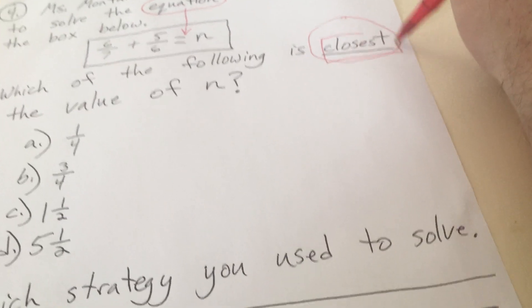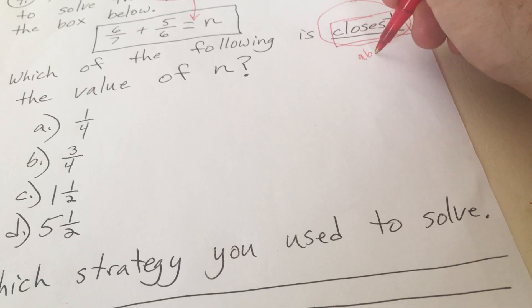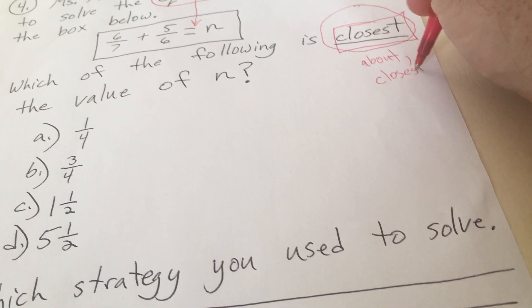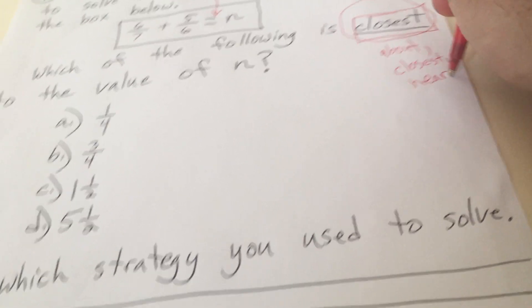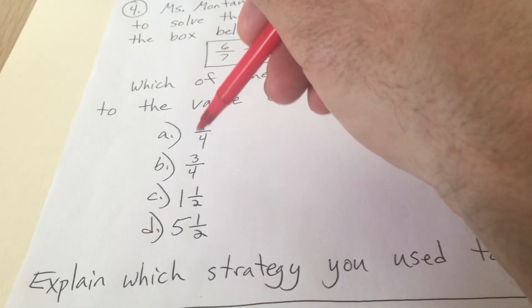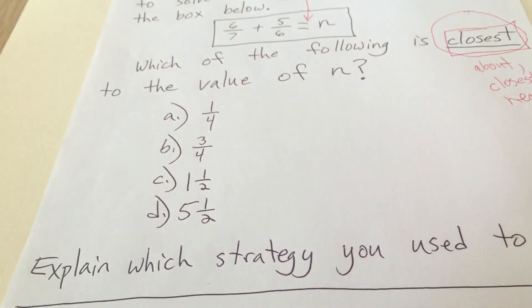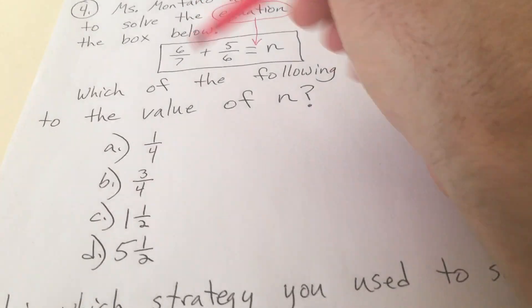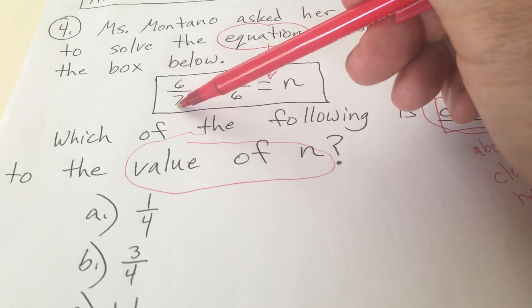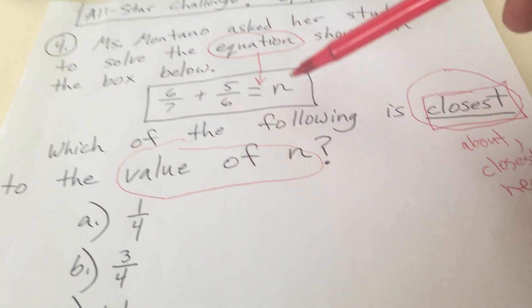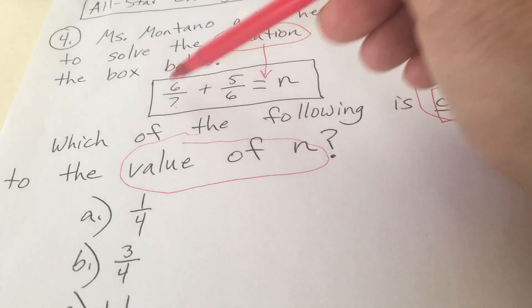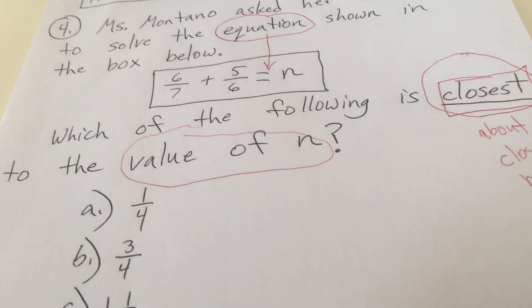Which one's going to be the closest, it says. So there's a little bit of estimation involved. When you see a word like about how many or closest or near, it doesn't mean we're not going to have to get an exact answer. We're just going to find out which one of these - one-fourth, three-fourths, one-and-a-half, or five-and-a-half - are closest to the value of n. The box says six-sevenths plus five-sixths equals n. So in order to find n, n is equal to these two things being added together. So we'll add those together and that will be equal to n.